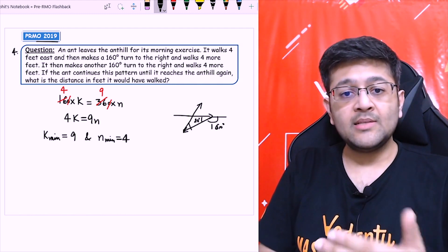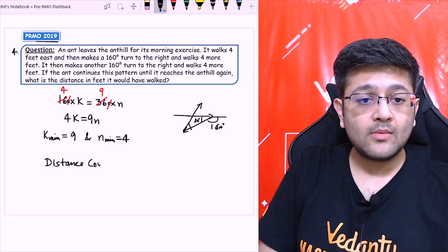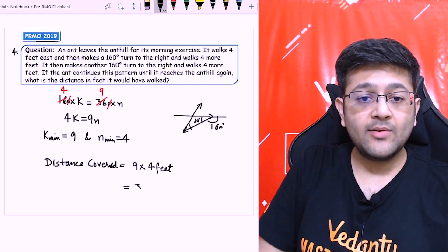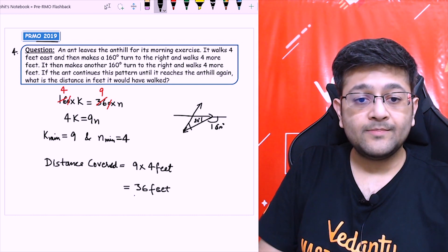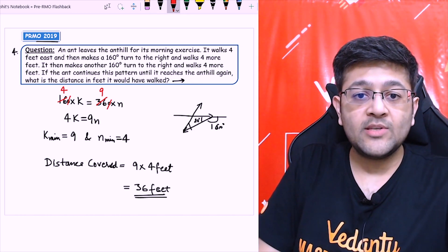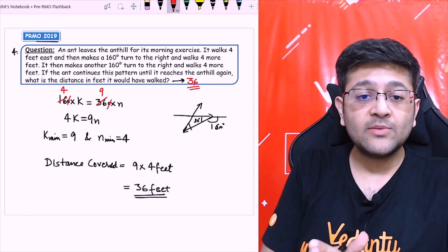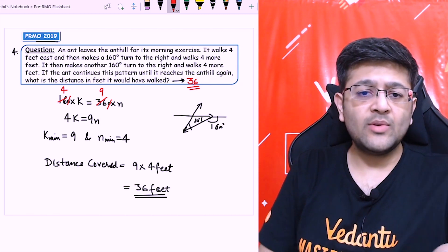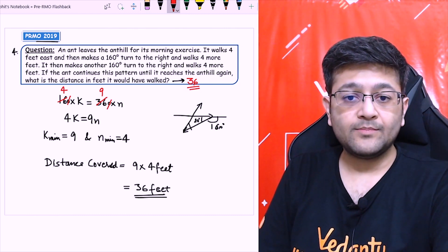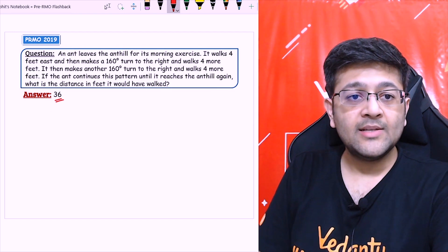What is the distance in feet? Each time it turns, it covers 4 feet distance. So distance covered will be equal to 9 times 4 feet. The answer will be 36 feet. So answer to this integer type question will be 36. I hope it's clear. I would urge you to think about other methods as well. There are many different methods but I think this one will be the easiest to understand. Let's move on to the next one.